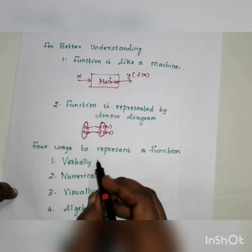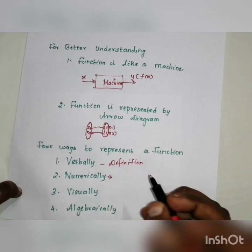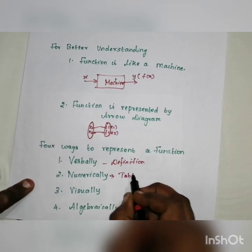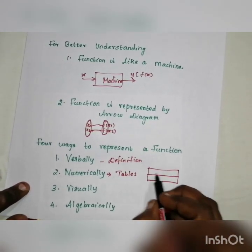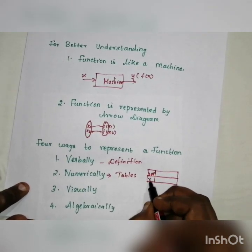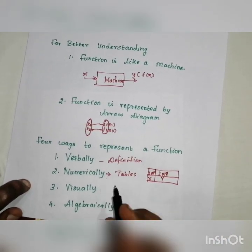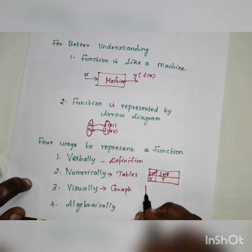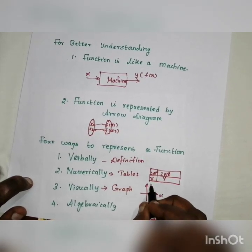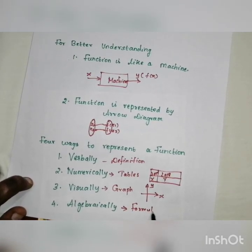A function can be represented in four ways: verbally, that is by definition; numerically, using tables — for example, population values in 2017 and 2018; visually, using a graph with x and y axes; and algebraically, using a formula.